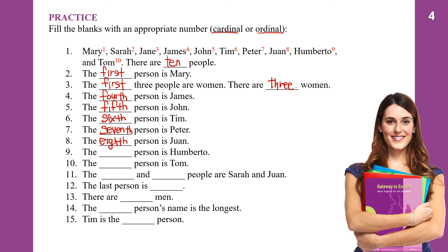The ninth person is Humberto. The cardinal number is N-I-N-E, nine, but the ordinal is N-I-N-T-H, ninth. The tenth person is Tom. But just like Mary being the first person, we can also say Tom is the last person.